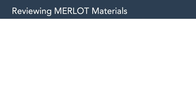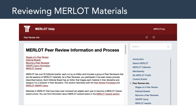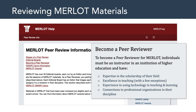So far, we've talked about finding and accessing Merlot materials, and perhaps even contributing through the production of multimedia materials. But another way you can contribute to Merlot is through reviewing Merlot materials. On their website, they talk about the peer review information and the process. If you want to become a peer reviewer, individuals must be an instructor in an institution of higher education and have expertise in the scholarship of their field, excellence in teaching, experience using technology in teaching and learning, and connections to professional organizations in their discipline. If you want your material professionally reviewed, Merlot is a great way to do it.